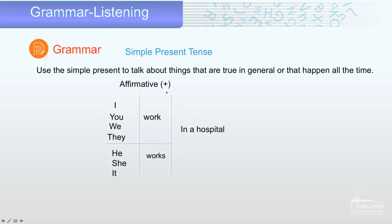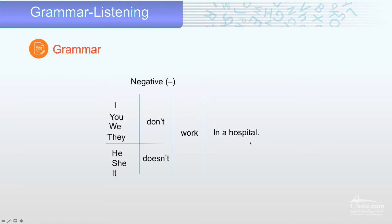Affirmative means the sentence is yes. With I, you, we, they — use the verb without adding anything, for example, 'I work in a hospital.' Or with he, she, it — we add S to the verb: 'He works in a hospital.' Got it? With negative, we add don't or doesn't.